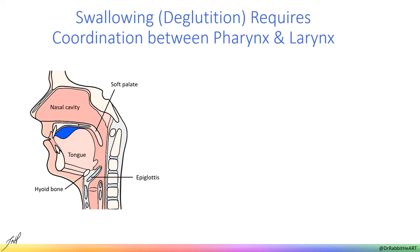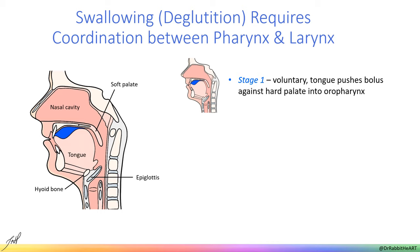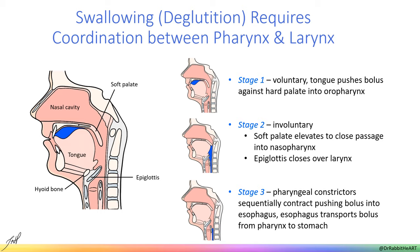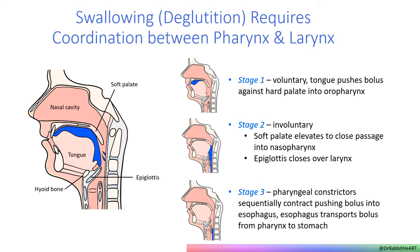To wrap up, we will discuss the interplay between the pharynx and larynx during deglutition, also known as swallowing. The pharynx is a space shared by both the airway and the GI tract, so breathing and eating must be separated — air through the larynx into the airway and food to the esophagus. It's very important to avoid aspirating foods or liquids into the airway. We can break swallowing down into three steps. During the voluntary phase, or stage one, the tongue pushes a bolus of food into the oropharynx. In stage two, the soft palate lifts, blocking the nasopharynx, while the epiglottis closes over the laryngeal inlet, blocking off the larynx. In stage three, sequential contraction of the pharyngeal constrictors pushes the food into the esophagus, and then esophageal peristalsis moves food into the stomach.